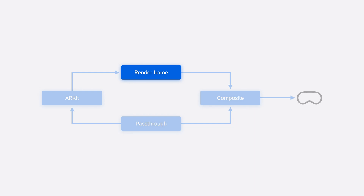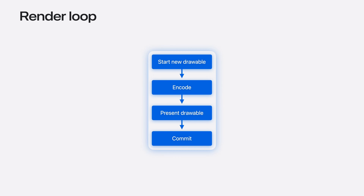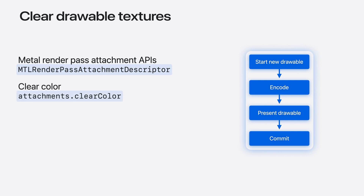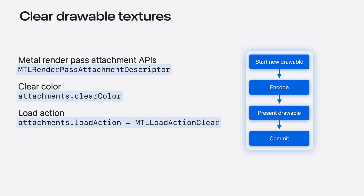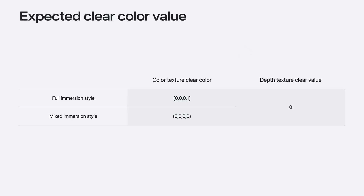At the beginning of your render loop, you should clear your drawable textures. The clear color value will change based on which immersion style you are rendering in. Here's a typical render loop: the app acquires a new drawable, configures a pipeline with load and clear actions, encodes its GPU workload, presents the drawable, and finally commits. During the encode stage, you will first clear the color and depth textures since your renderer might not touch every pixel. The depth value should always be cleared to zero. However, the correct value for your color texture depends on which immersion style you are using. In full immersion style, you should clear the color texture to (0, 0, 0, 1). In mixed immersion, you should use all zeros.